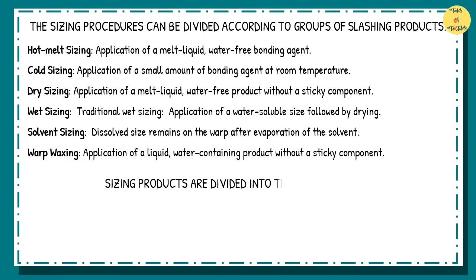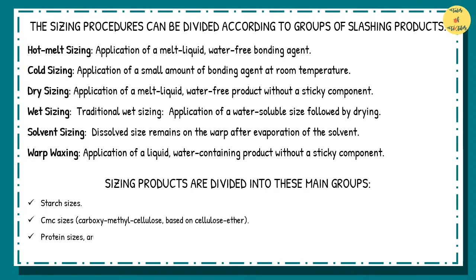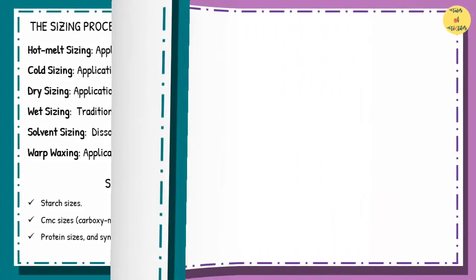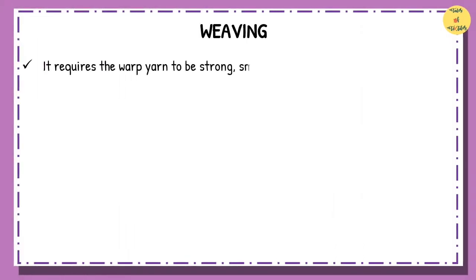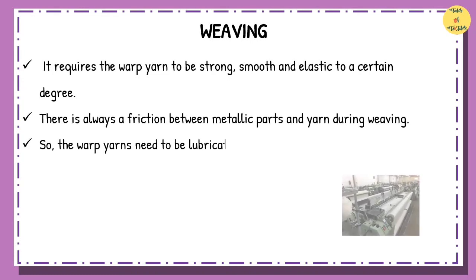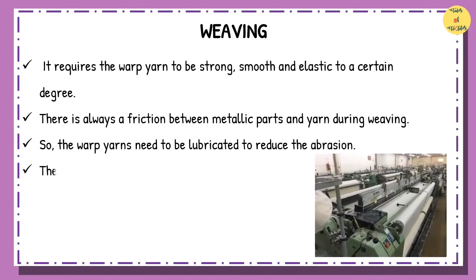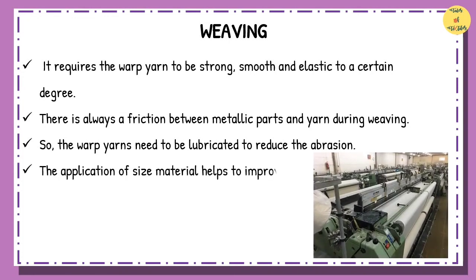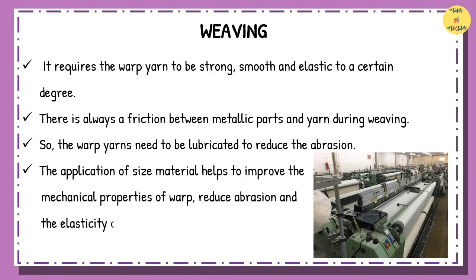Sizing products are divided into these main groups: starch sizes, CMC sizes (carboxymethylcellulose, based on cellulose ether), protein sizes, and synthetic sizes. It requires the warp yarn to be strong, smooth, and elastic to a certain degree. There is always friction between metallic parts and yarn during weaving, so the warp yarns need to be lubricated to reduce the abrasion. The application of size material helps to improve the mechanical properties of warp, reduce abrasion, and maintain the elasticity of yarn.